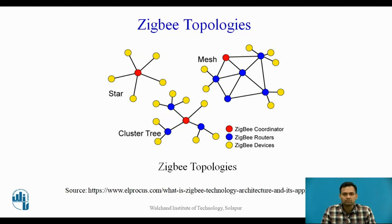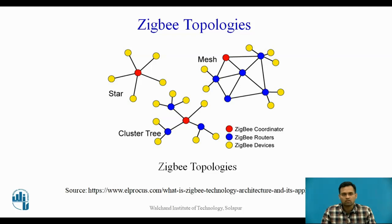Next is mesh topology. In mesh topology, there is one Zigbee coordinator, a number of routers, and a number of Zigbee devices. All Zigbee devices can communicate with each other through the routers. Mesh topology is generally used in wireless sensor networks because if any one Zigbee device is damaged, data can be transferred to another Zigbee device, so there is no loss of data.